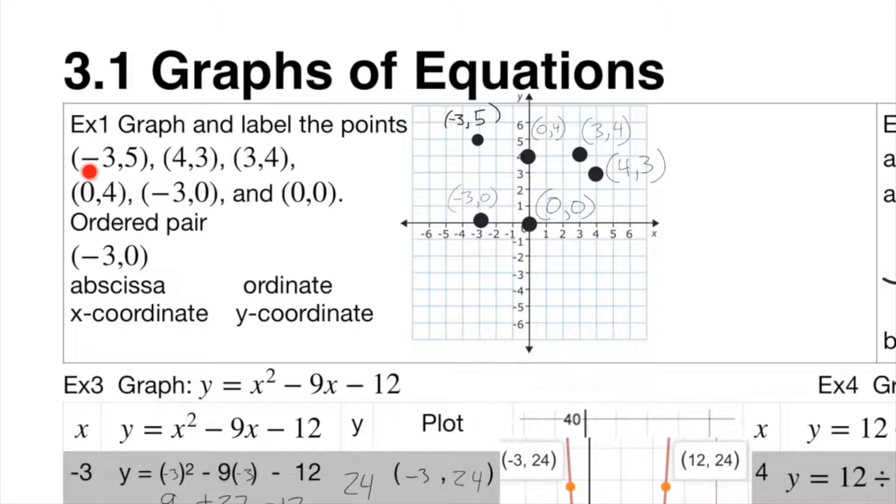So graph and label the points. You've got negative 3, 5 - it goes negative 3 to the left and then up 5. 4, 3 goes to the right 4 and up 3, not to be confused with 3, 4, which goes over 3 and up 4. 0, 4 goes left to right 0 and then up 4. Negative 3, 0. One thing to keep in mind is that these are called ordered pairs because you've got two numbers that are paired together. The first one is the x-coordinate, sometimes called the abscissa, and then the second one is the y-coordinate, sometimes called the ordinate. Pause it if you don't have it completely copied down, but otherwise we'll just move on.